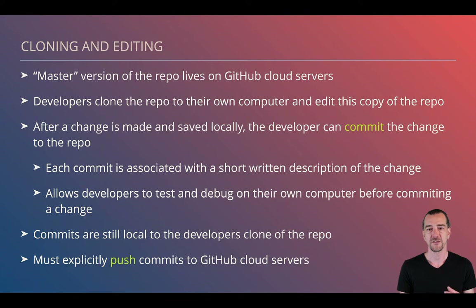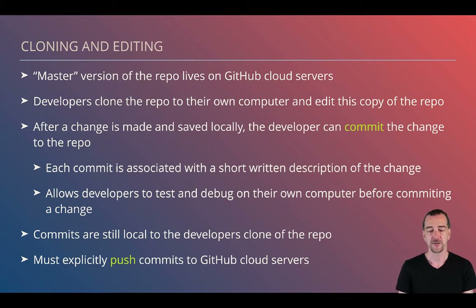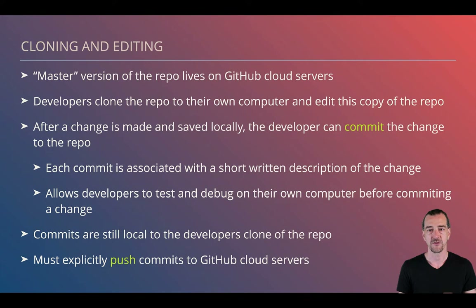The difference between saving and committing is that saving just saves the file, while committing says you're ready to make that change part of the repo and track it. When you commit, you add a short commit message — usually a sentence or two — about what you changed and why. This allows each developer to test and debug their code on their own computer before committing. Typically on a workday you'd make a bunch of commits documenting each one, then push all your changes to the cloud at the end of the day.